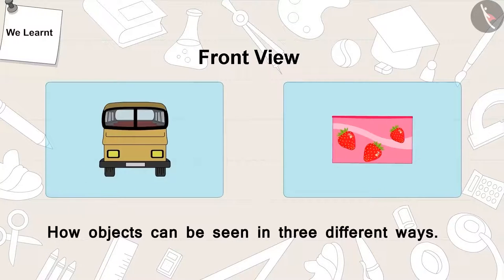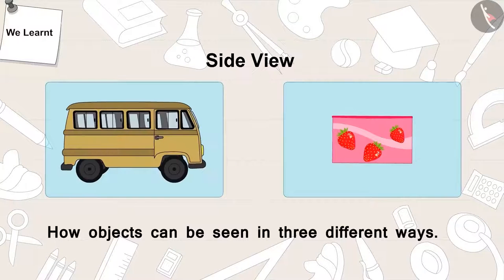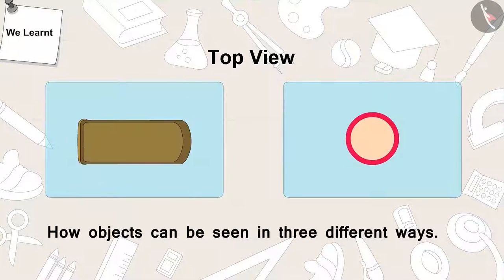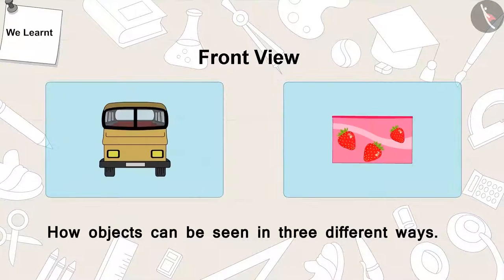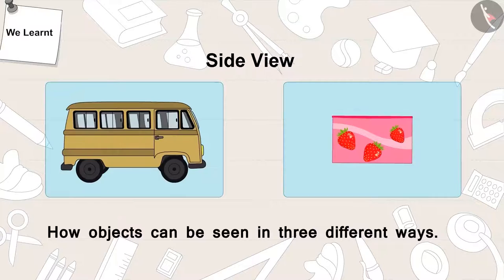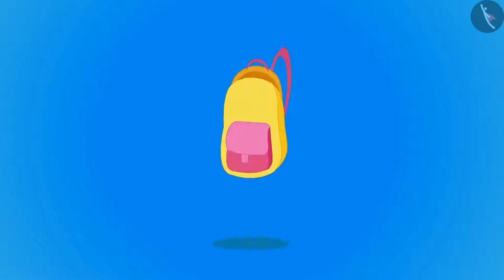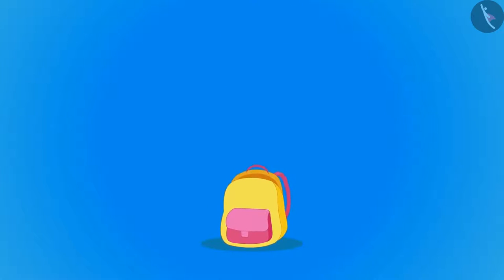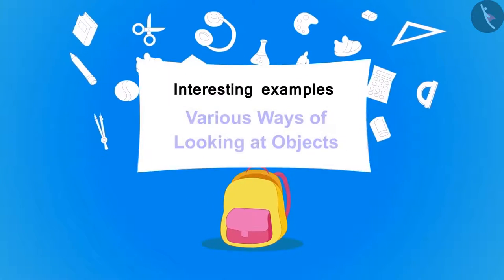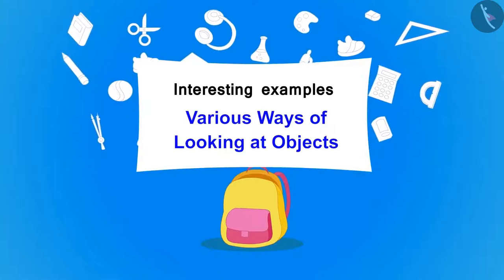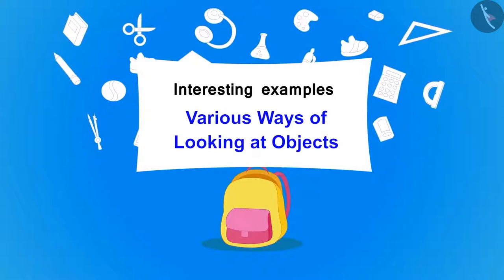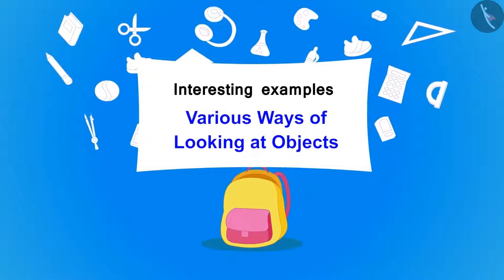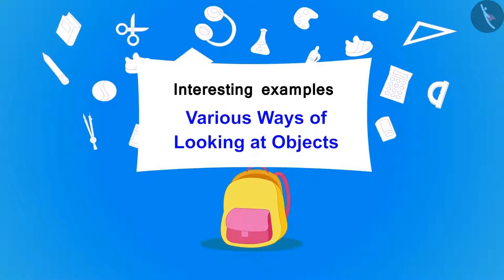In the previous video, we learned how objects can be viewed in three different ways. In this video, we will learn more about this with the help of some interesting examples.